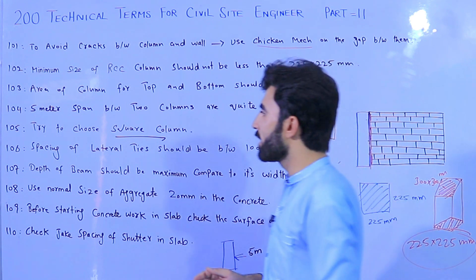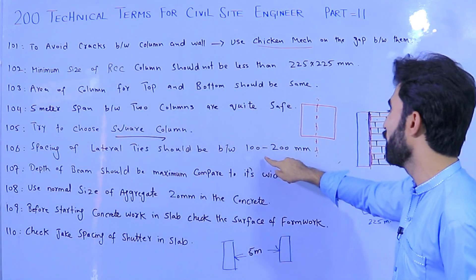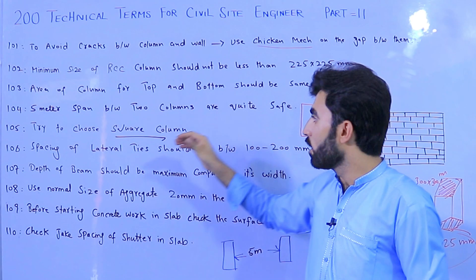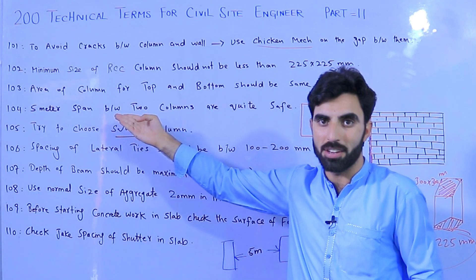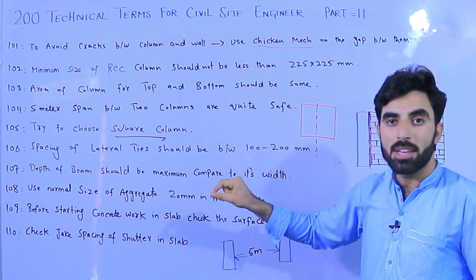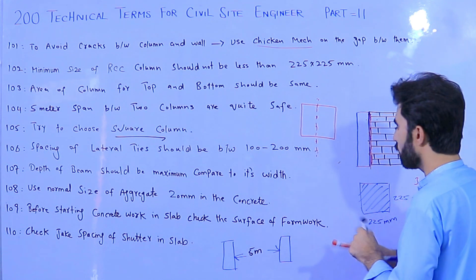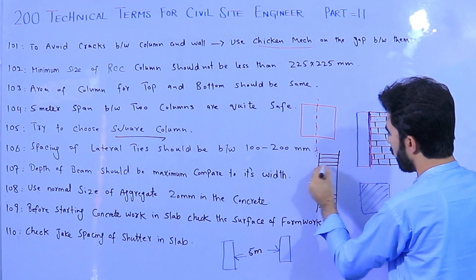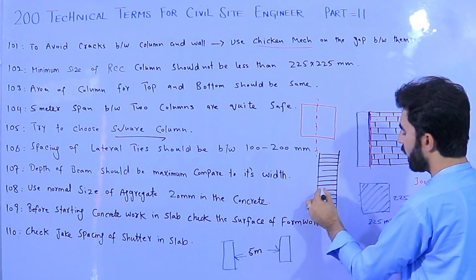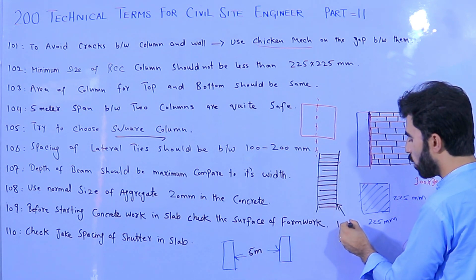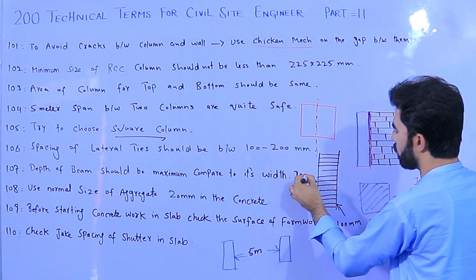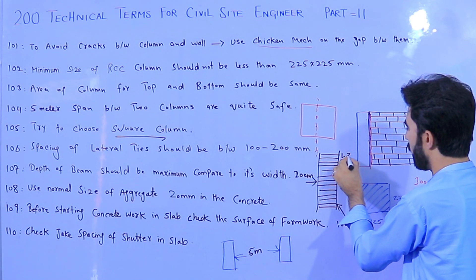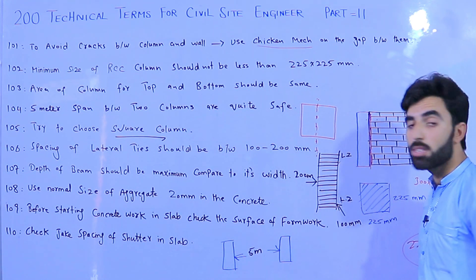Term 106: The spacing of lateral ties should be between 100 to 200mm. For columns with a five-meter safe span, at the bottom use 100mm spacing, at the mid-section 150 to 200mm, and at the top also tighter spacing — as the top and bottom are lapping zones (LZ). This is very useful to remember.